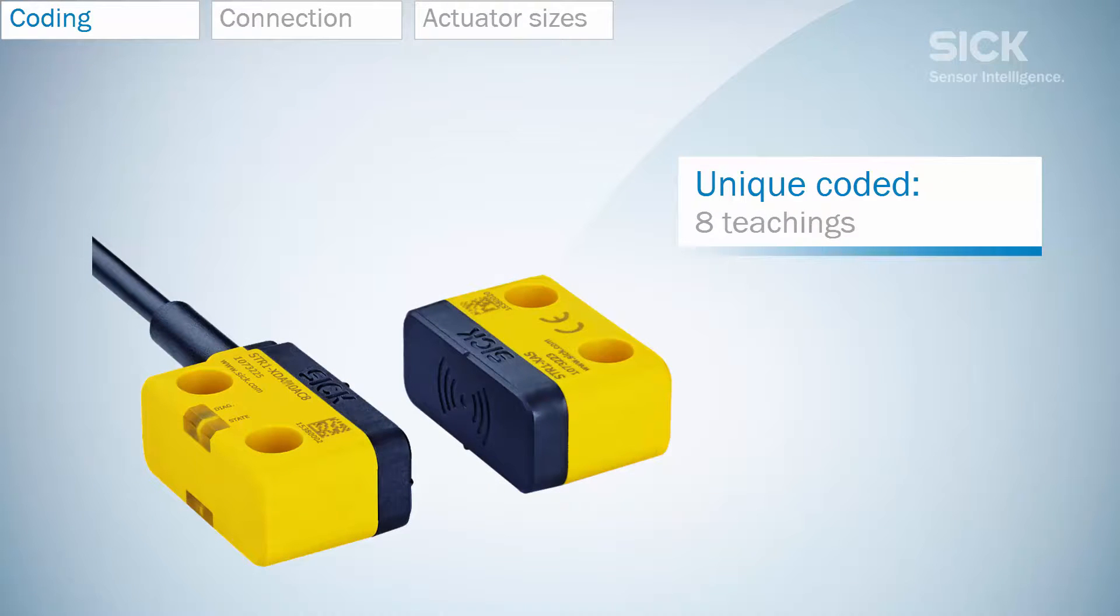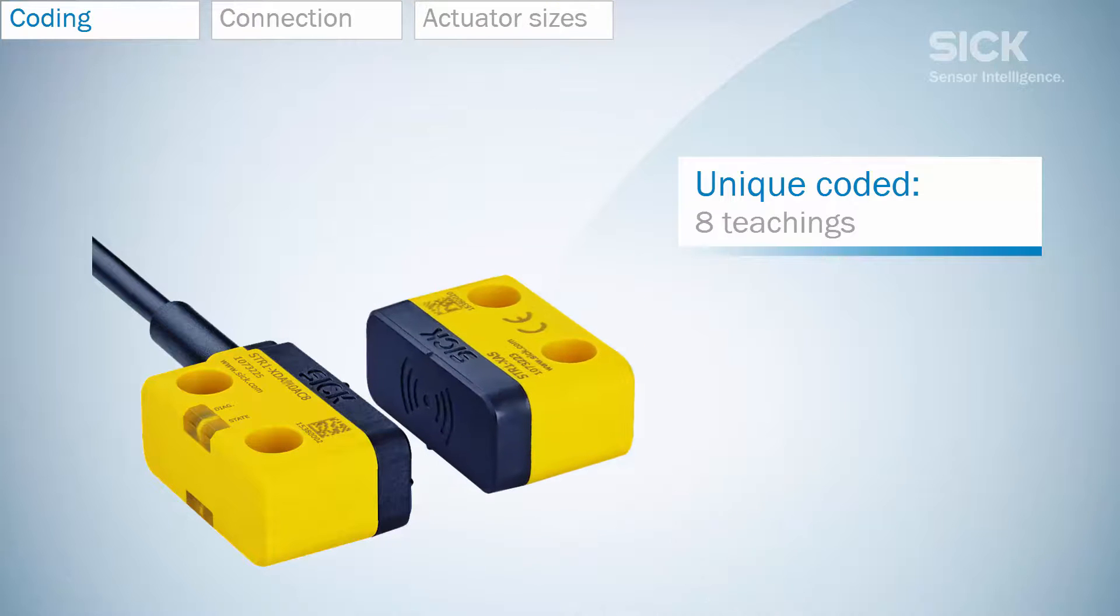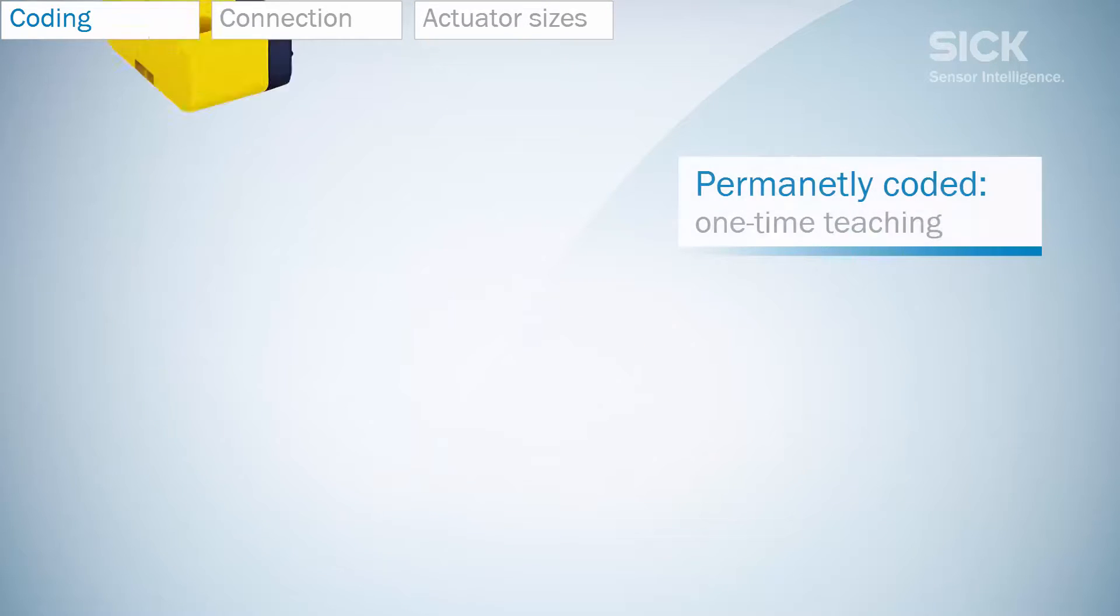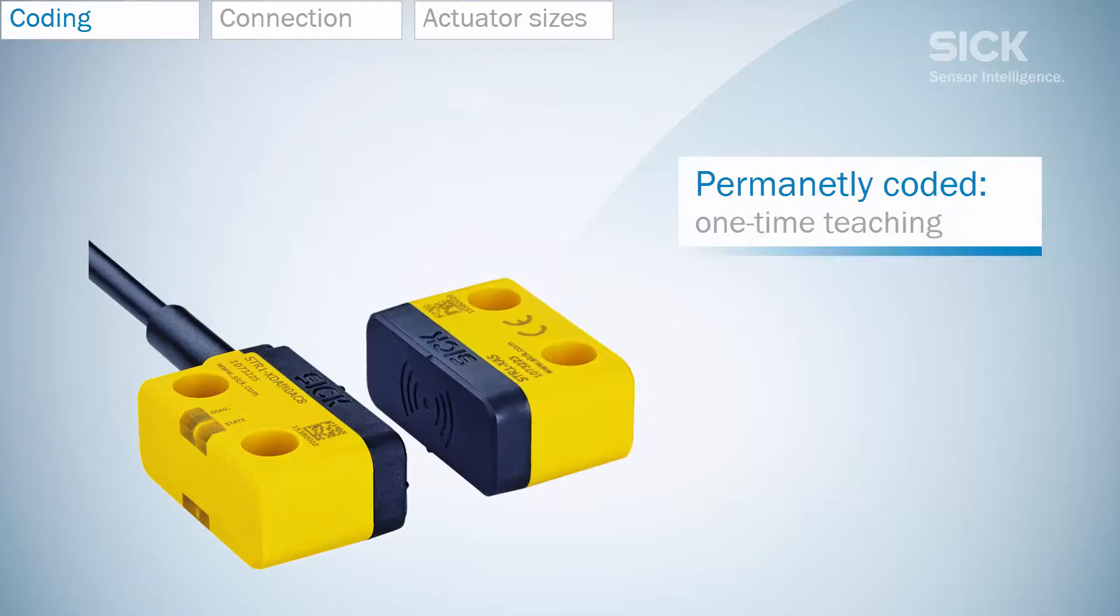The unique coded sensor allows up to eight teachings, so you can exchange the actuator in case of damage. Permanently coded sensors allow only one teaching.